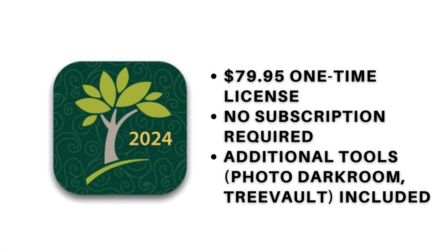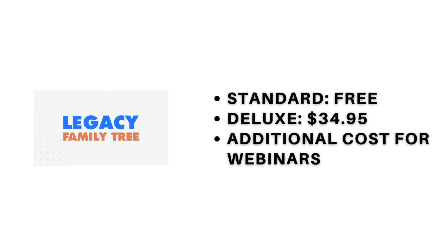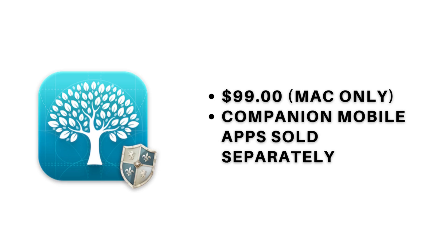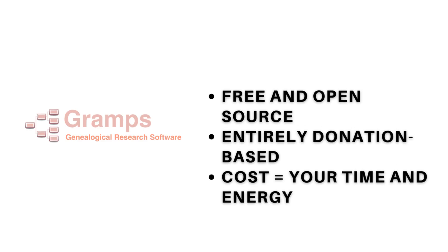On pricing: FTM 2024 is $79.95 as a one-time license with no subscription required — additional tools like Photo Darkroom and TreeVault are included. Roots Magic 9 has a free version; the full version is $39.95 — excellent value. Legacy 10's standard version is free; Deluxe is $34.95, with additional cost for webinars. Reunion is $99, Mac only, with companion mobile apps sold separately. Gramps is free and open source, entirely donation-based — the only cost is your time and energy.